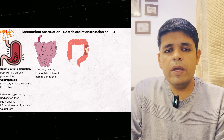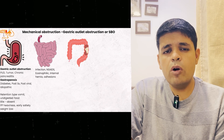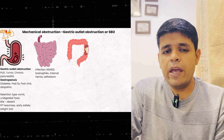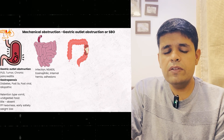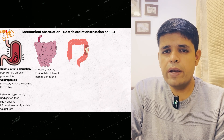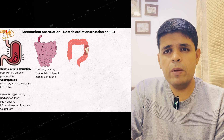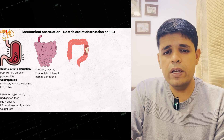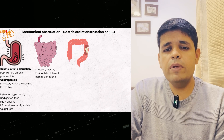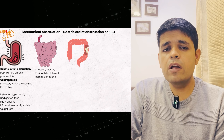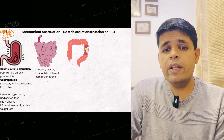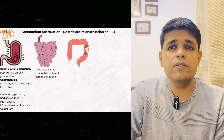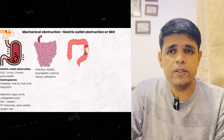Now coming to small bowel causes — it can be infection, some sort of enteritis, drug-related (most commonly painkillers), eosinophilic enteritis, internal hernia (rare), or adhesions. Always ask for a history of any prior surgery, as patients who had surgery in the past — for example, appendicectomy — can develop adhesion-related obstruction.